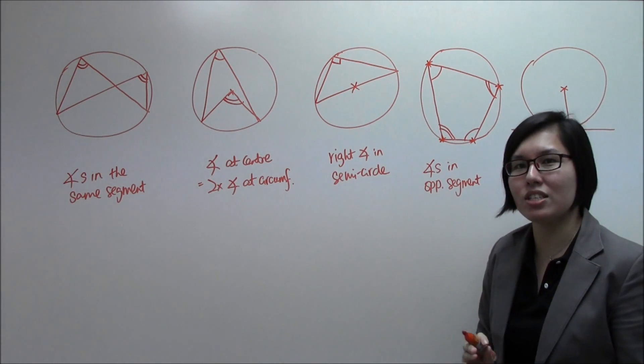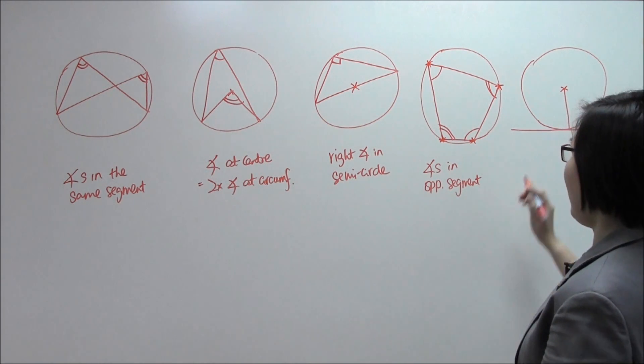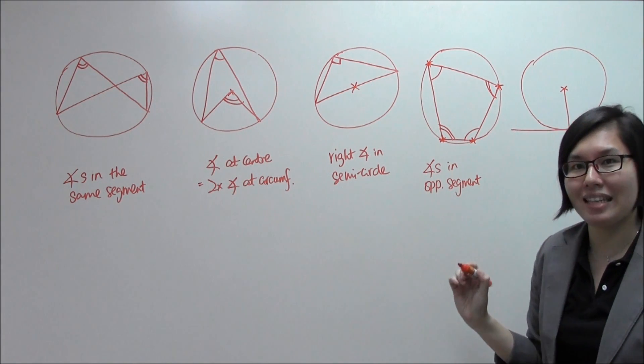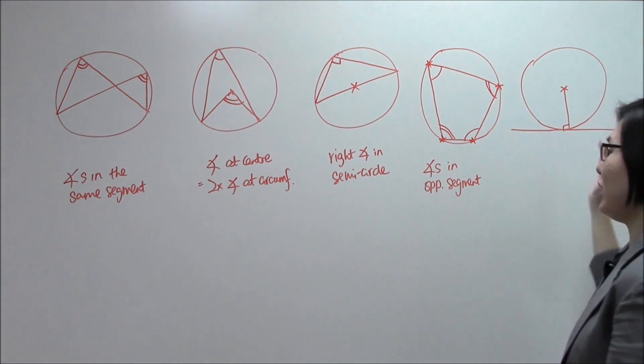We have come down to the last angle property for this video. Over here, this line that I've drawn here is called tangent. And this line over here is our radius.